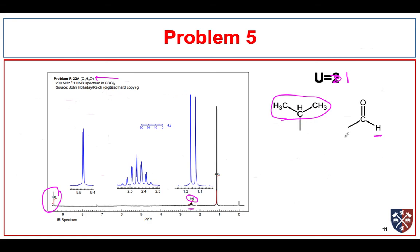So those are the only two fragments we have — we just click them together, and this explains the spectrum.